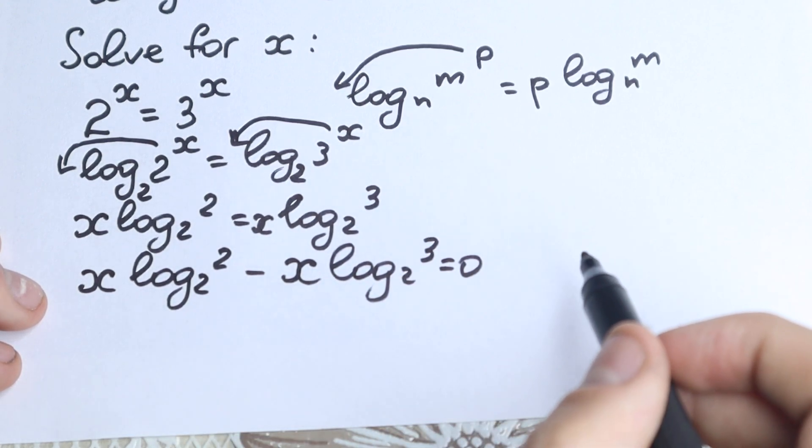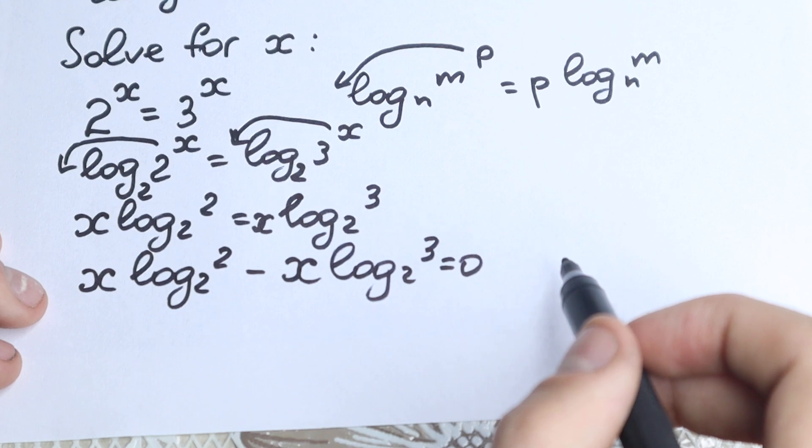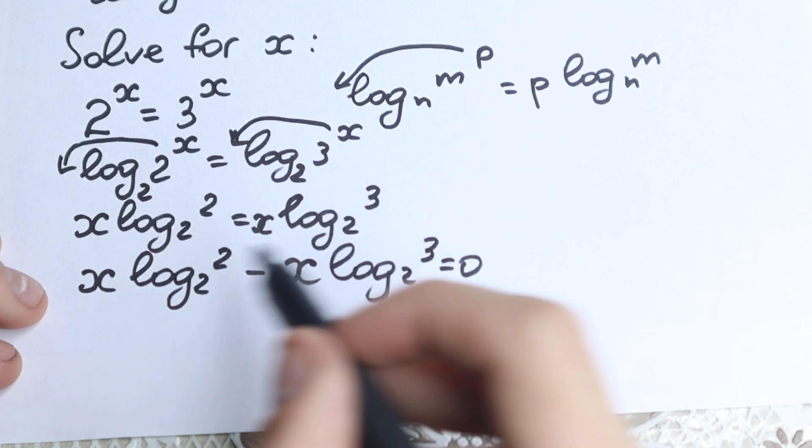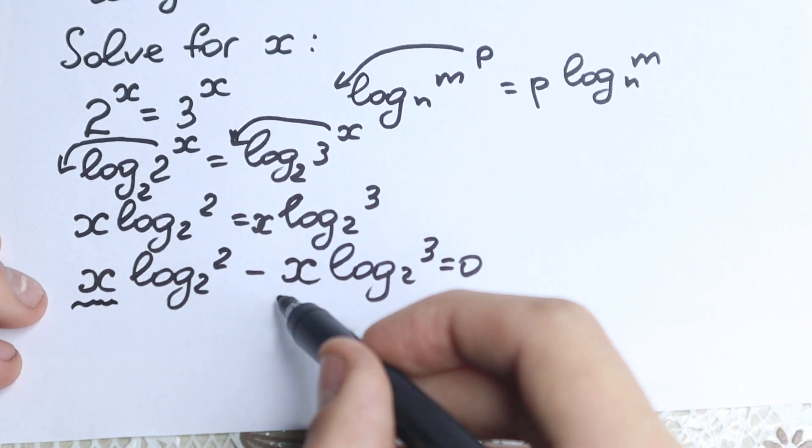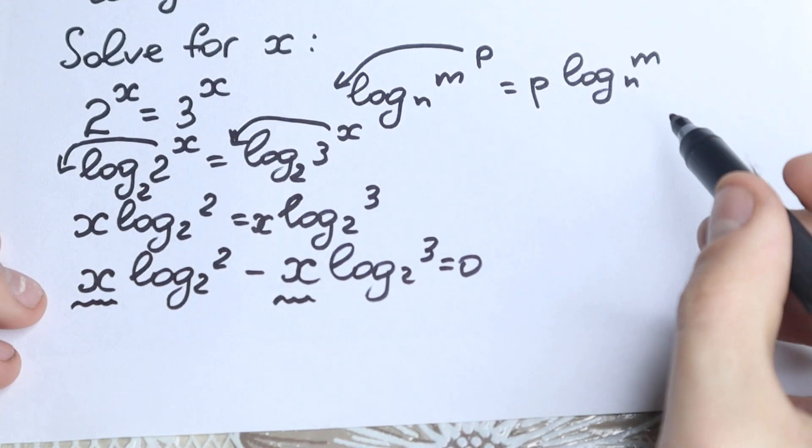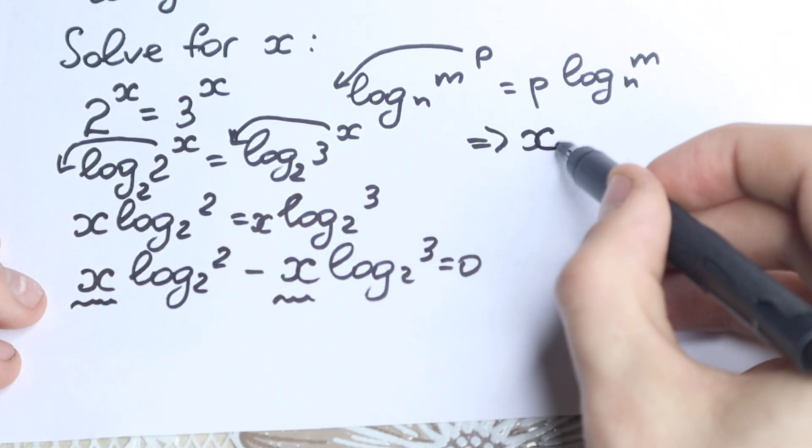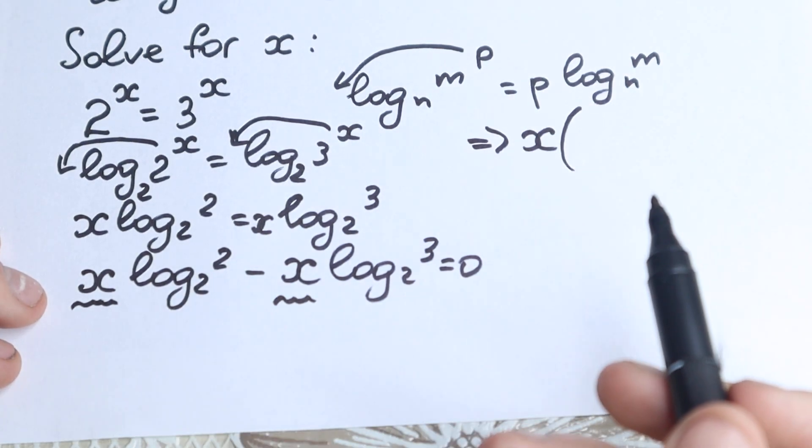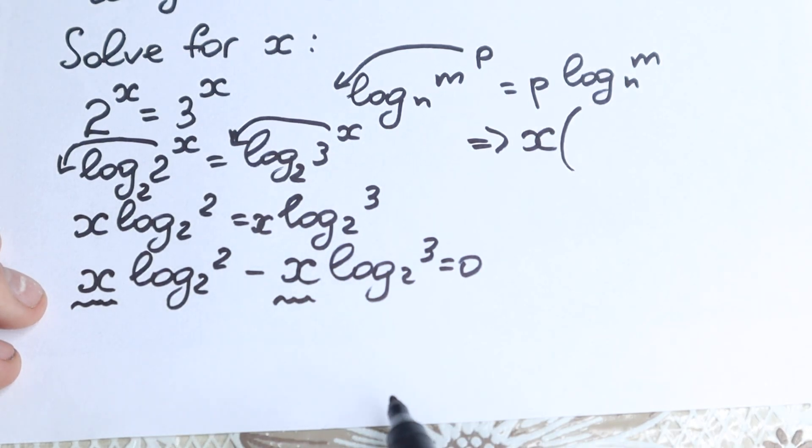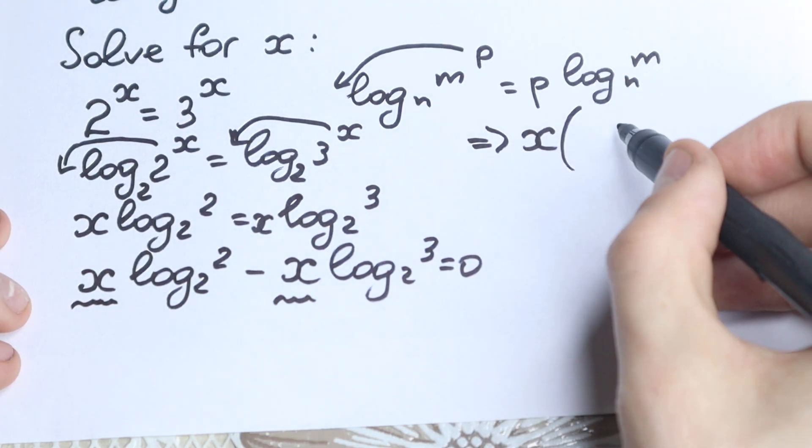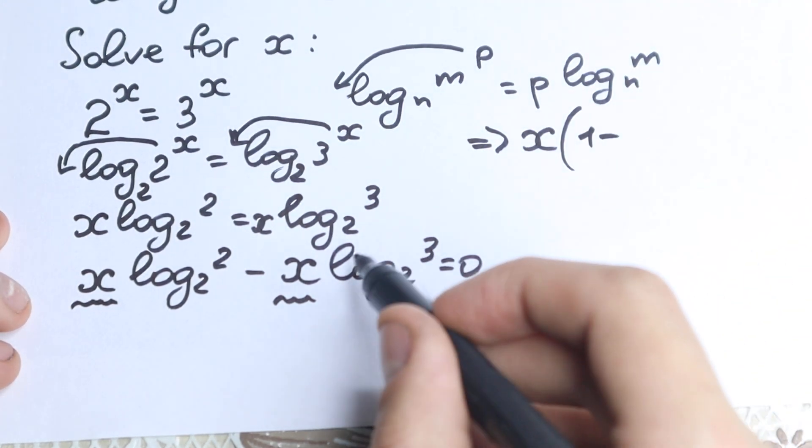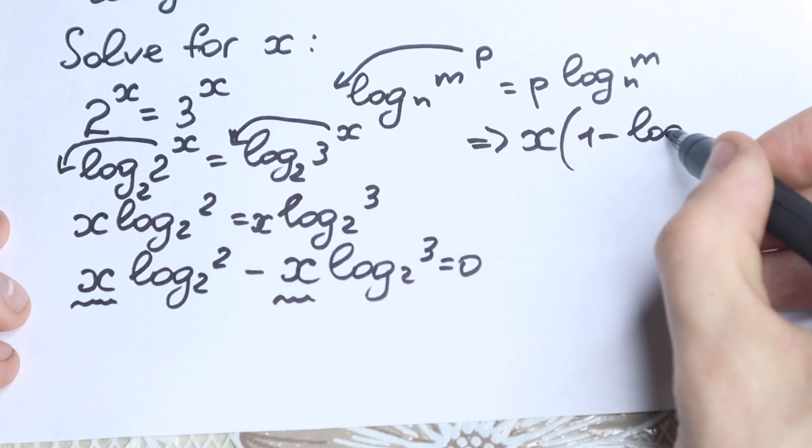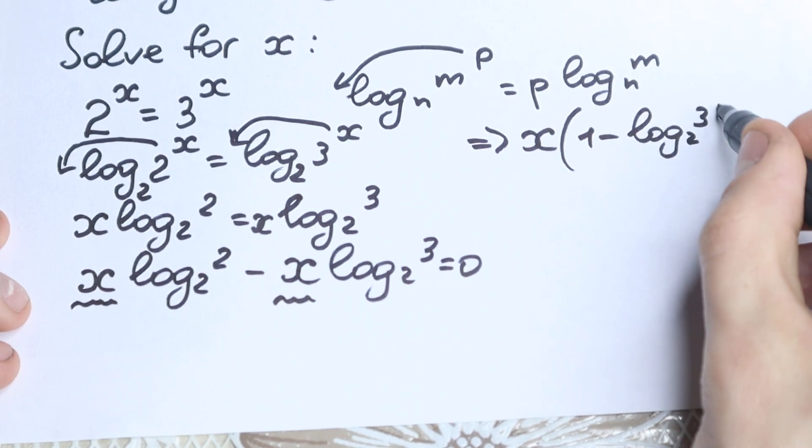So we grouped it. And now we can easily factor out x. We have x here and x here, so we can factor it out. We have x times (log base 2 of 2 minus log base 2 of 3) equals 0. We all know that log base 2 of 2 equals 1. This is a classic case in logarithms. So we have x times (1 minus log base 2 of 3) equals 0.